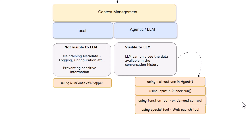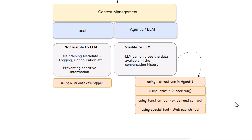We call it on-demand context because the LLM model decides at which particular point it has to call that function. As seen in an earlier video, we were using a weather tool to get real-time weather information. When asking for real-time weather, LLM calls the function tool, and the information coming out of that function tool is also passed to the context and is visible to LLM.